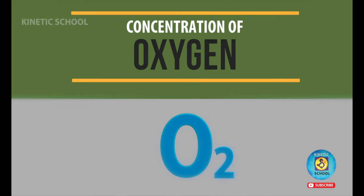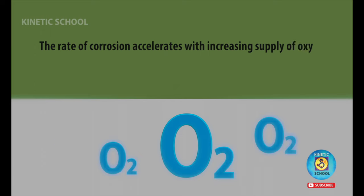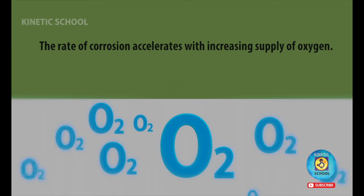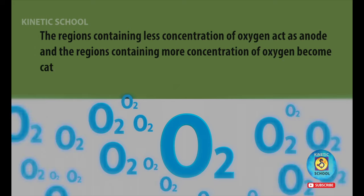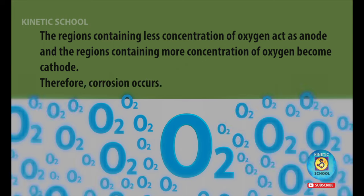Concentration of oxygen. The rate of corrosion accelerates with increasing supply of oxygen. The regions containing less concentration of oxygen act as an anode, and the regions containing more concentration of oxygen become cathode. Therefore, corrosion occurs.